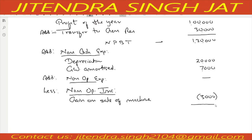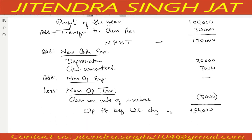When we add all these points, what we get? 1,30,000 plus 20,000 plus 7,000 minus 3,000 equals Rs. 1,54,000. This is our operating profit before working capital changes.